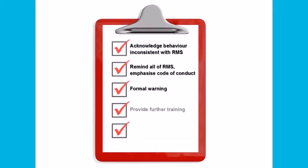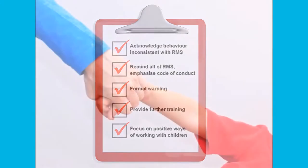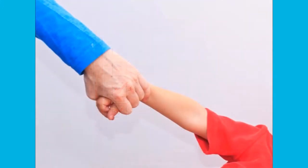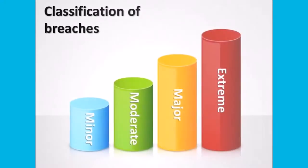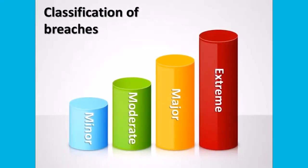Another example might be a staff member who witnesses a colleague using excessive physical force as a behavior management technique. This would be considered an extreme breach of your risk management strategy.